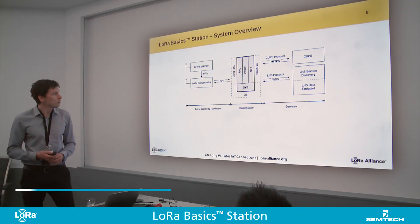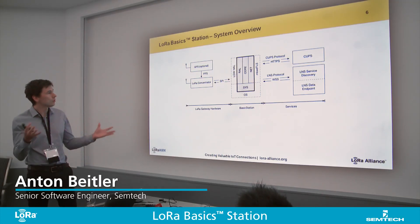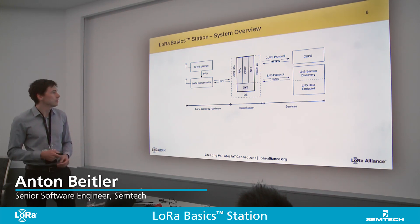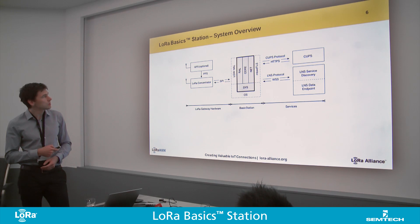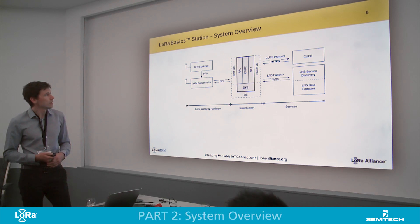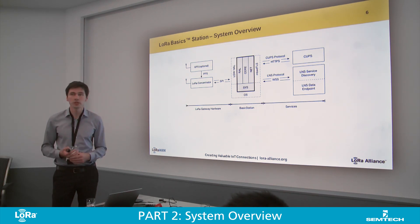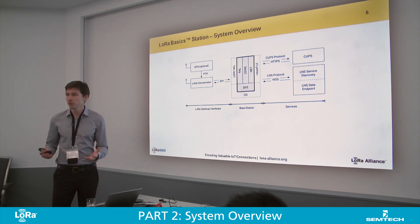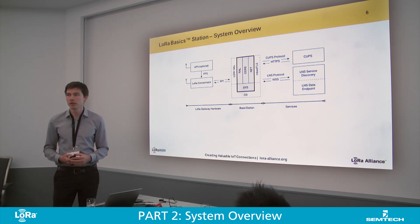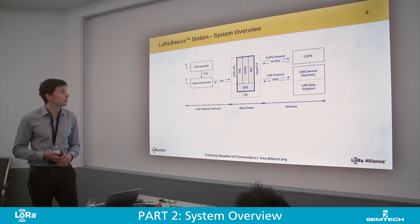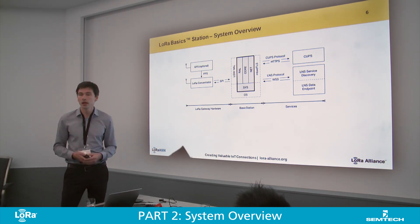The Basic Station and the role it plays in the overall system architecture is depicted here. Basic Station is a component that talks over SPI to the radio hardware, and it does that over the LGW HAL. This is an open-source software component that has been around for a long time, which is a hardware abstraction layer around the S6301 chip to allow you to interact with that chip over SPI. It handles all the registers and offers a high-level API.